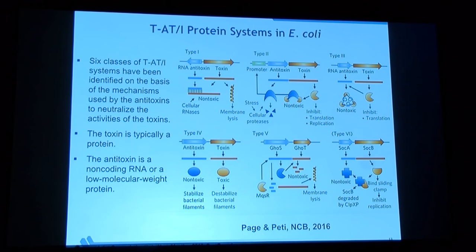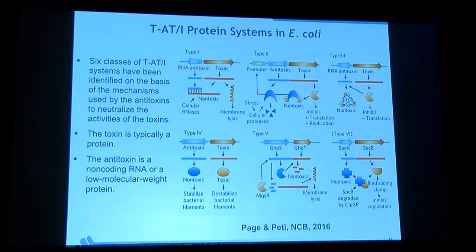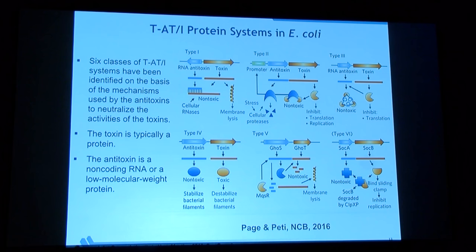In E. coli, for example, there are six classes of toxin-antitoxin systems. In type 1 and type 3, the antitoxin is RNA that interacts with messenger RNA or the toxin. In types 2, 4, 5, and 6, the antitoxin or immunity protein is a protein, but its function is very different across these different organisms.